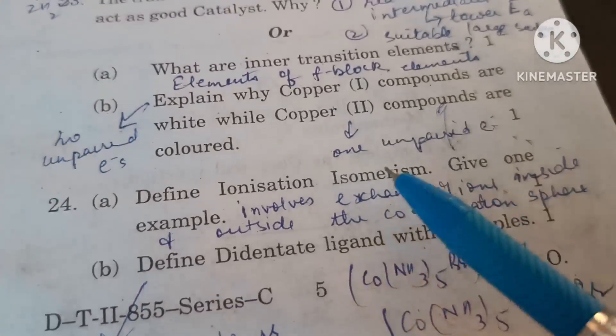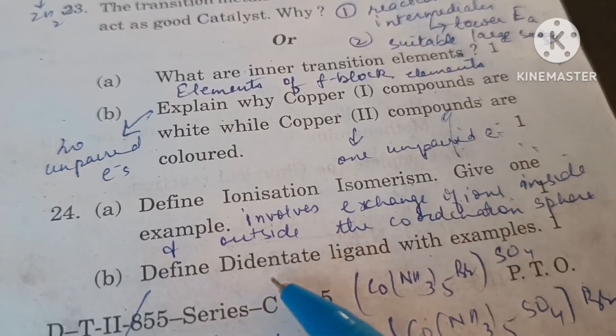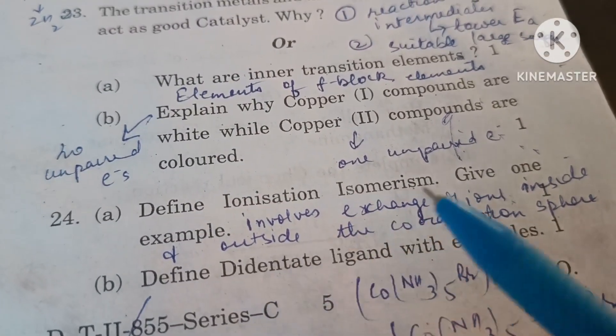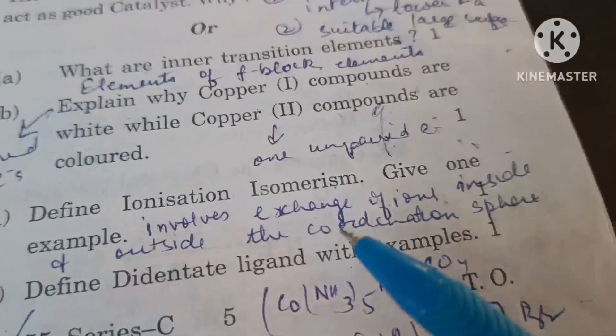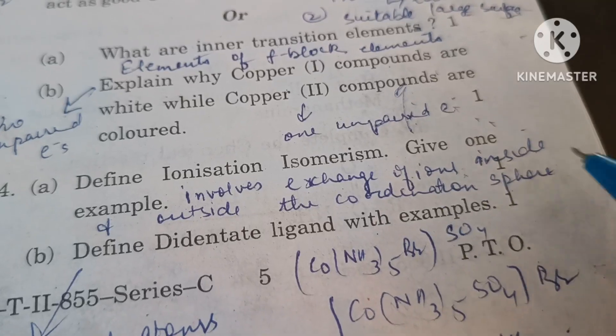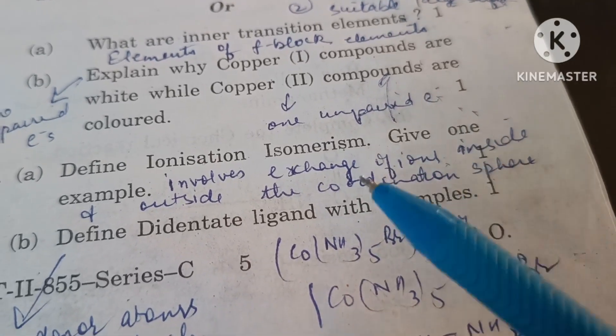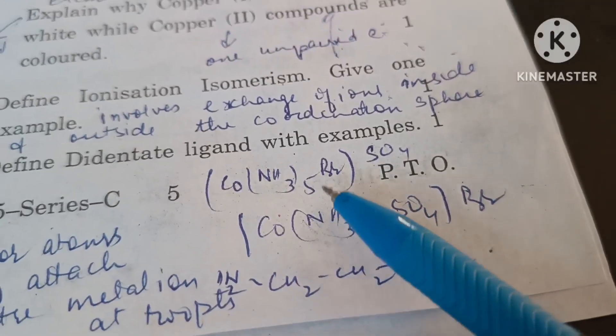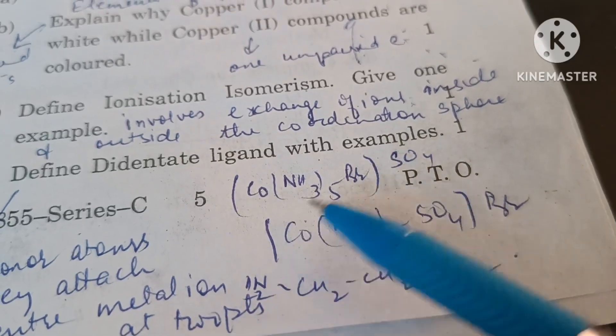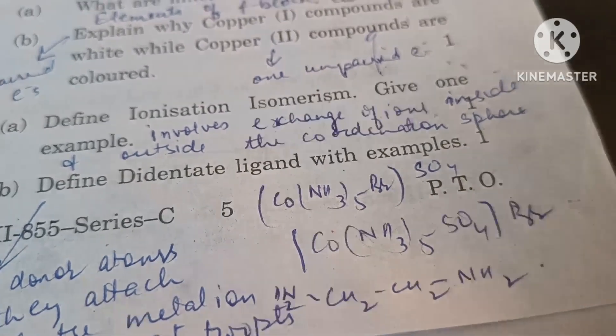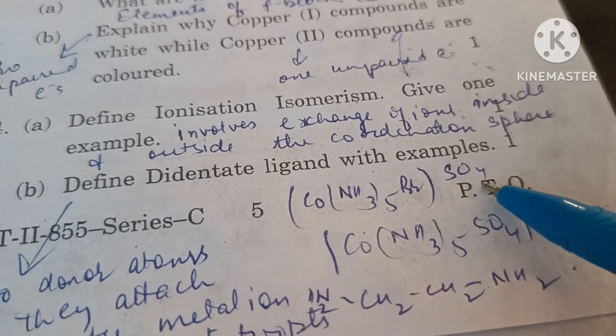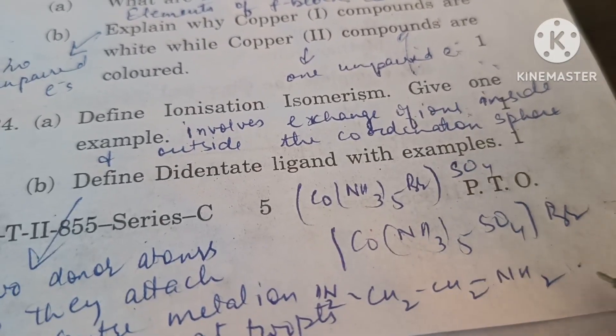Define ionization isomerism, give one example. Compounds which involve exchange of ions inside and outside the coordination sphere are called ionization isomers and the phenomena is called ionization isomerism. For example, pentaamine bromido cobalt sulfate and pentaamine sulfato cobalt bromide are ionization isomers. This on dissolving in water will give sulfate ions whereas this will give bromide ions.